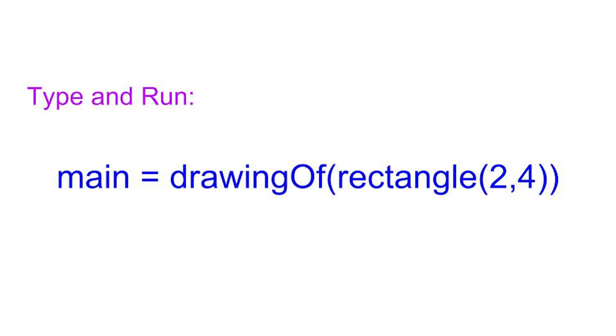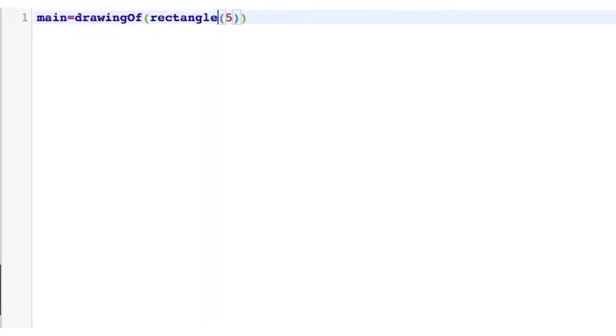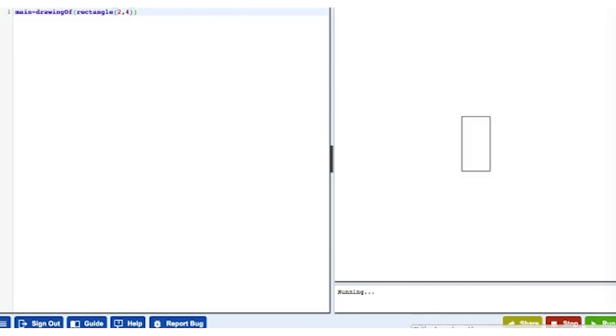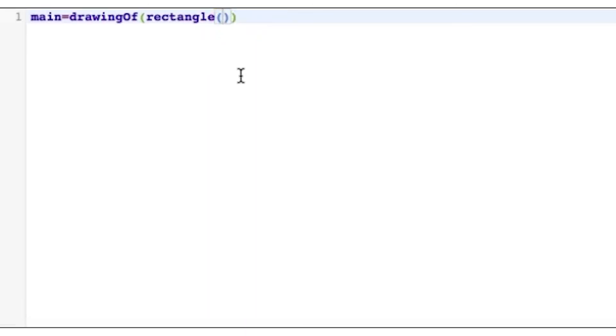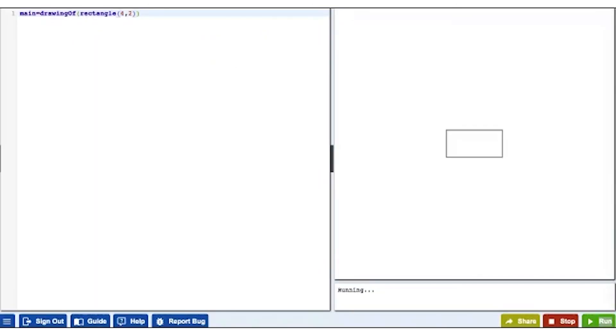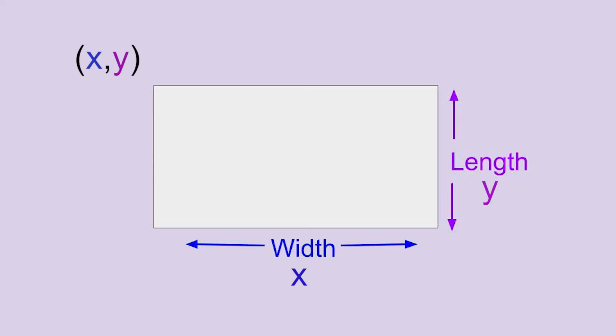Let's play around with an example. Type in your editor main equals drawing of rectangle with a parameter of 2 for the width and 4 for the length. What happens if you switch the numbers, the 2 and the 4? So the first number is the x, how wide it is on your screen, how wide it is on the x-axis. And the second number is on the y-axis, how tall it is going up and down.